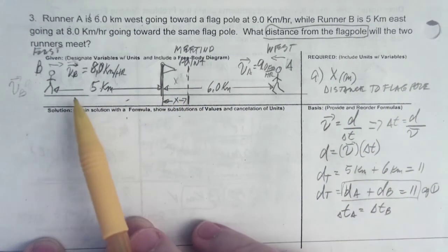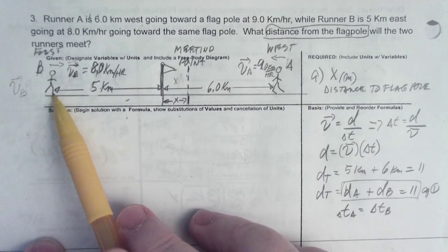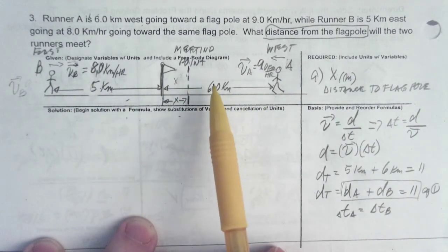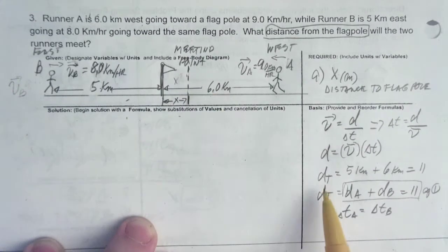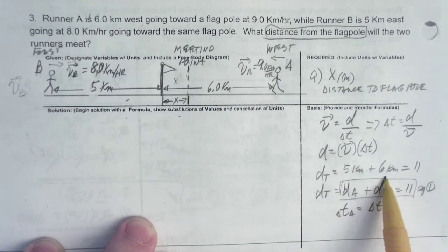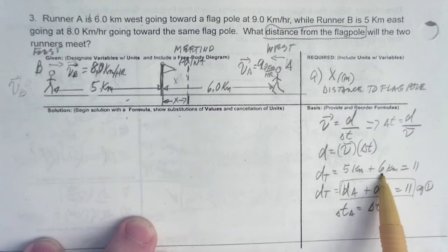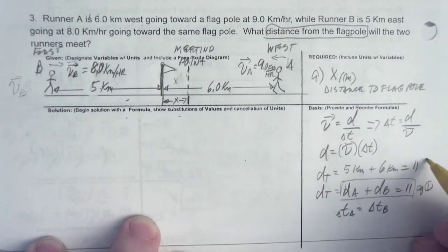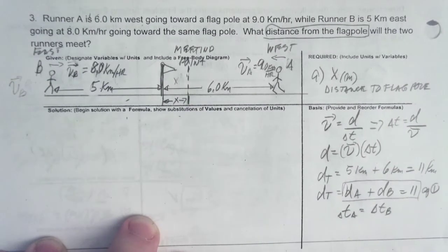So, a couple of things. You'll notice that the distance between the runners is 5 plus 6, 11. And that's what we have here. The total distance between the two runners is 11 kilometers. That should be clear to anybody.